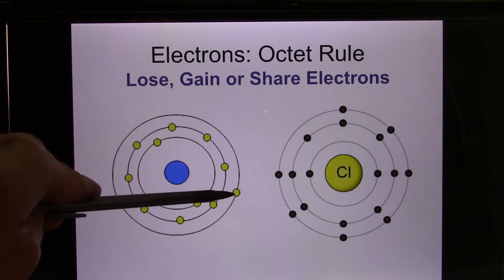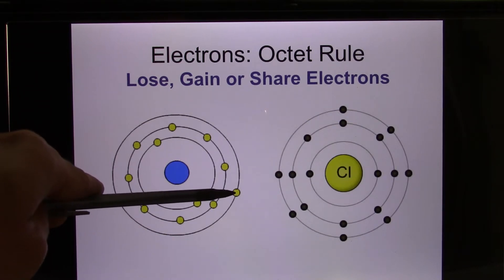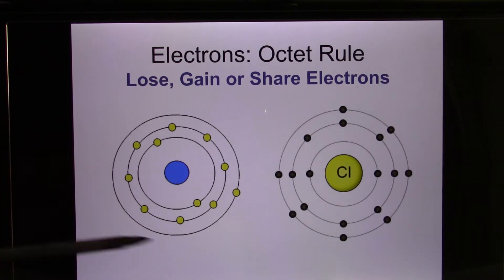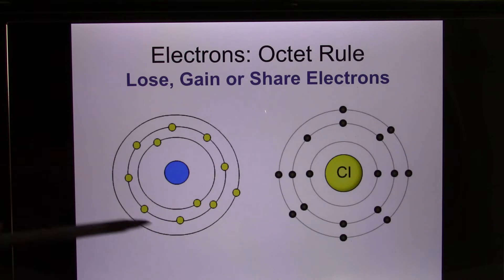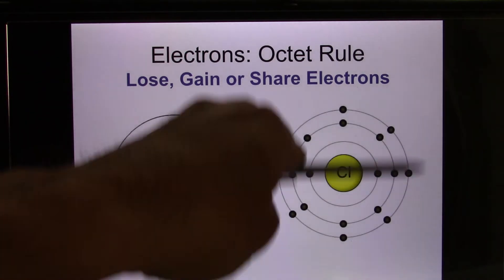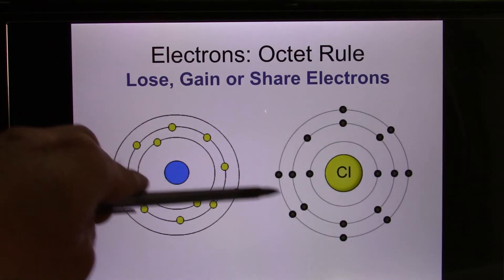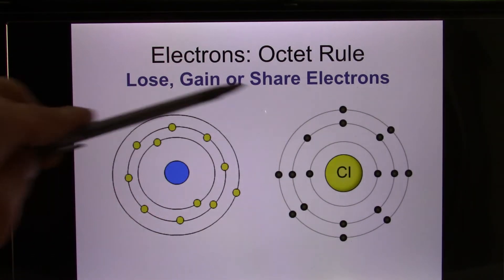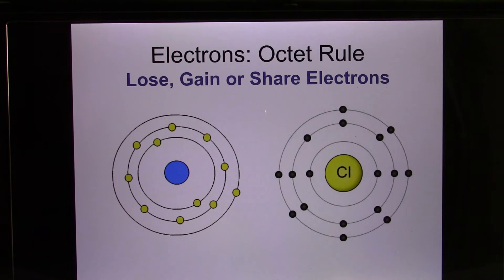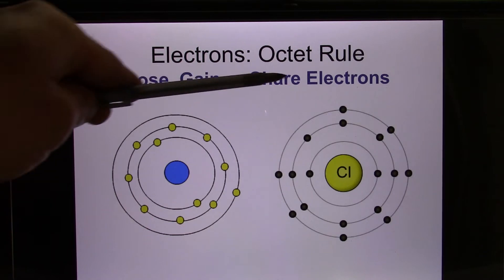If the valence shell has only one electron, it needs eight, so it will probably lose that one. Once you lose it, that shell disappears and the new valence shell becomes the inner one — which already has eight, so that makes it happy. If the outside has seven, you probably need to find one more to make it happy. In chemistry, happy means low energy, and that's when chemical interactions start — losing, gaining, or sometimes sharing electrons.